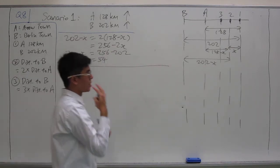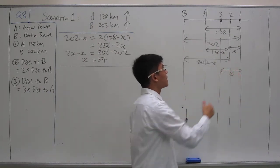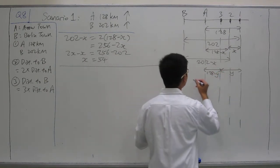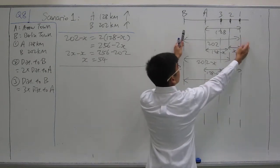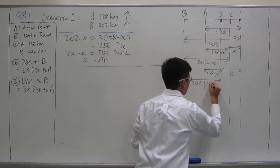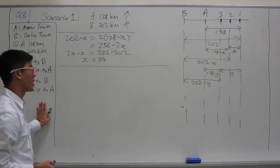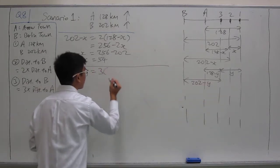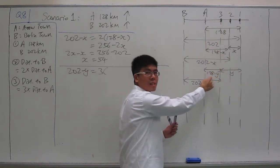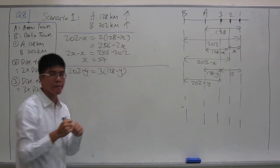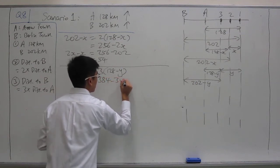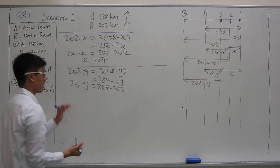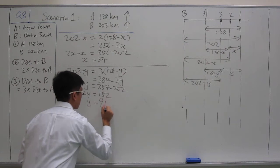For the third signpost, we introduce another variable y, which is the distance from the first signpost to the third signpost. Then the third signpost to A is 128 minus y, and the third signpost to B is 202 minus y. Distance to B equals 3 times distance to A: 202 minus y equals 3 times 128 minus y. We expand the bracket, bring all y's to the left and numbers to the right, and solve to get y equals 91.